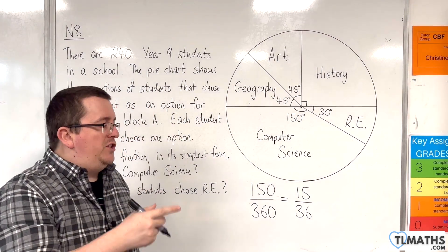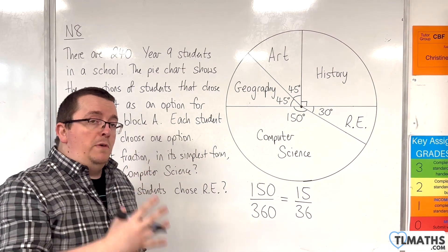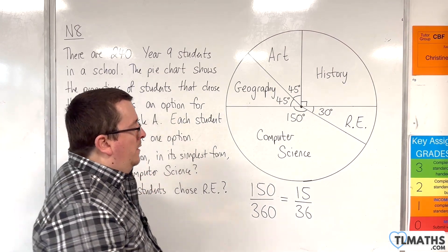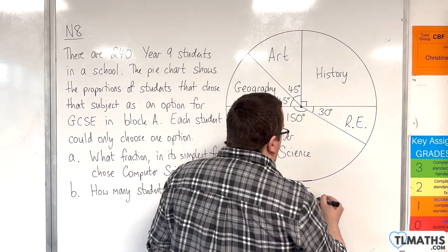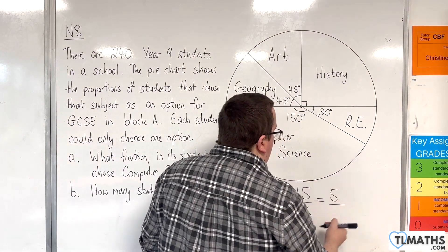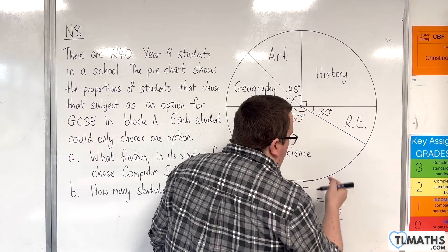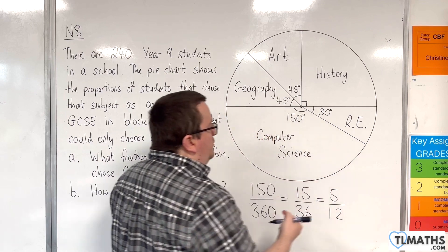15 and 36, they're not both even, so we can't divide through by 2, but they are both multiples of 3. If we divide top and bottom by 3, 15 divided by 3 is 5, 36 divided by 3 is 12. And that is as simplified as we can get it.